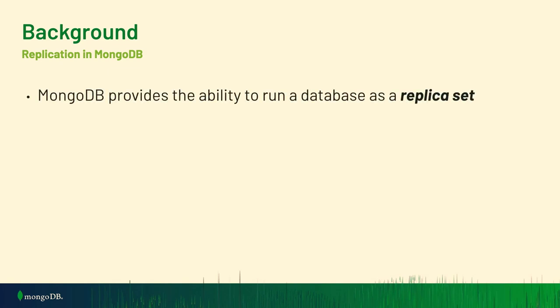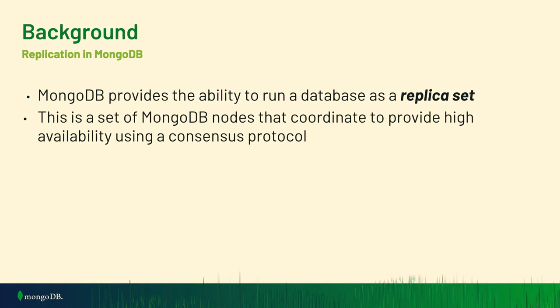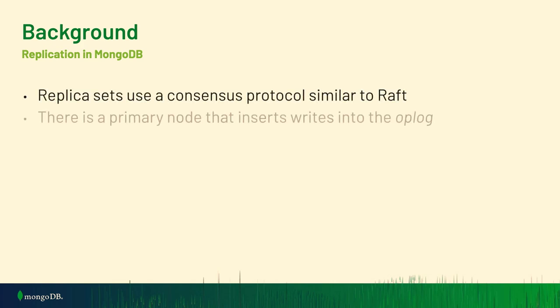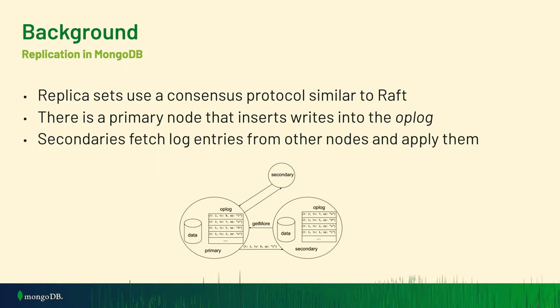Replication in MongoDB: you can run a MongoDB database as a replica set, which is a set of MongoDB nodes that coordinate together to provide high availability using a consensus protocol. The protocol we use is similar to the Raft algorithm, a consensus replicated log protocol. It's a leader-based system. There's a primary node that inserts writes into the op log — a sequential log of database operations describing transformations to the database state. Secondary nodes fetch log entries from other nodes and apply them, either directly from a primary or from another secondary.